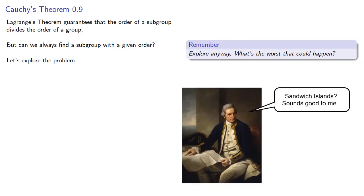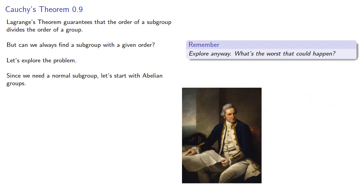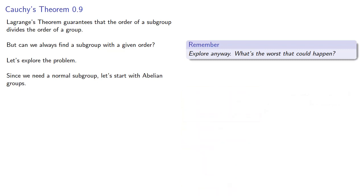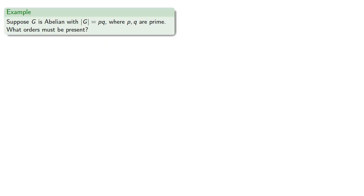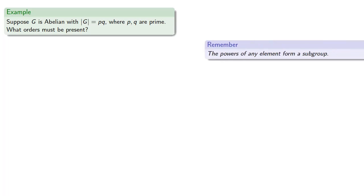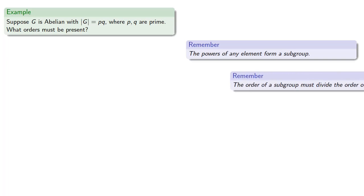Since we need a normal subgroup, let's start with abelian groups so that all of our subgroups are normal. Suppose G is abelian with the order of G equal to pq, where p and q are both prime. What orders must be present? Let's keep in mind two important ideas: the powers of any element form a subgroup, and the order of a subgroup must divide the order of a group.